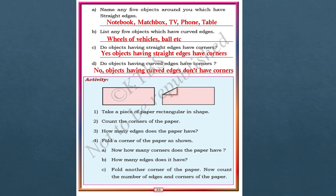There is one activity: take a piece of paper rectangular in shape. Count the corners of the paper. How many edges does the paper have? Four edges. Fold the corner of the paper as shown — now how many corners does the paper have? Three. How many edges? Still four edges. Fold another corner and count the number of edges and corners again. Try this out.